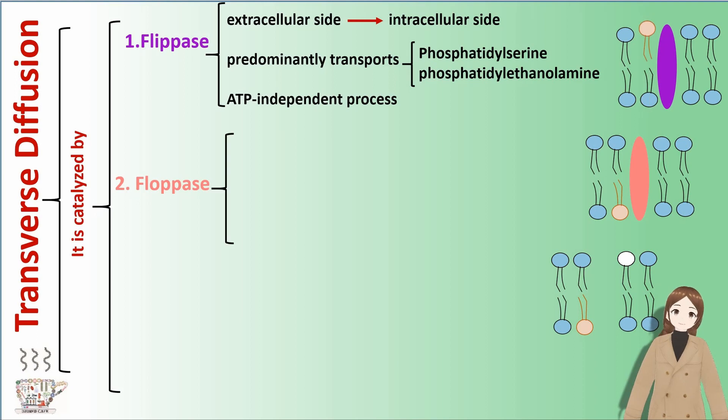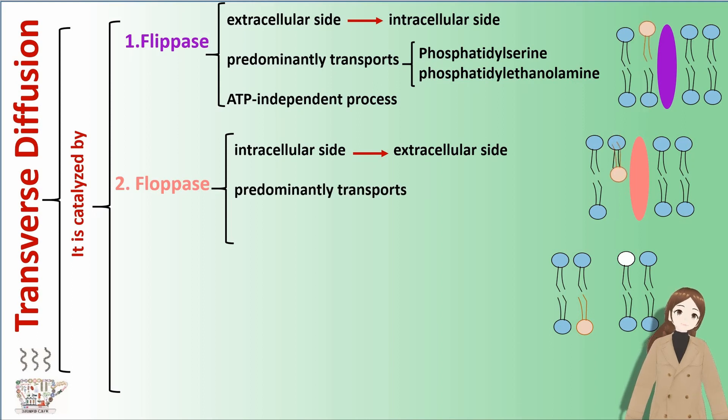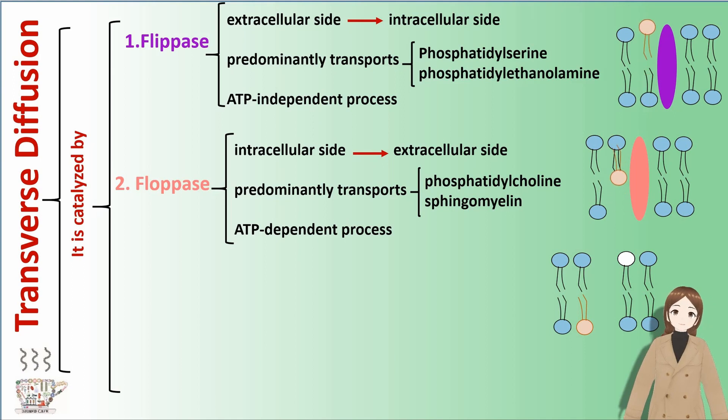Floppase moves phospholipid from intracellular side to extracellular side. It predominantly transports phosphatidylcholine and sphingomyelin. It's an ATP-dependent process.